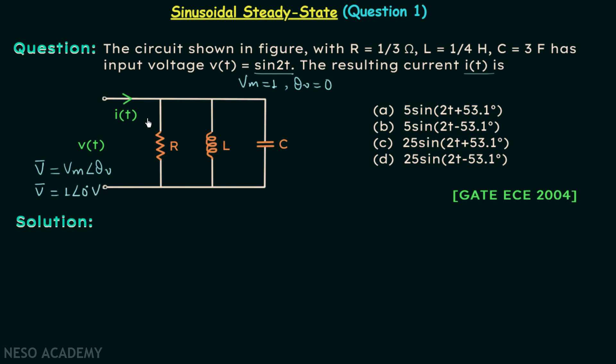Now moving on to this current I(t), we will have the phasor of this current I phasor and this is something we are required to find out. And we know that resistance will remain as it is in the frequency domain.